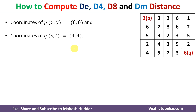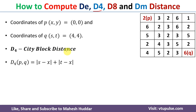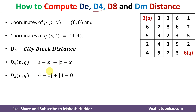Next, we calculate D4, also known as the city block distance. The formula is: D4 between p and q equals |s−x| + |t−y|, the sum of the absolute differences. Putting in the values: |4−0| + |4−0| = 8. So the D4 city block distance between p and q is 8 units.